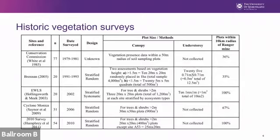Ian Hollingsworth and Ingrid Meek in 2002 did 20 plots in an area called Georgetown, using stratified systematic sampling. There was also work done for Psicoma Monica. Then a 2010 survey of 54 plots, which was stratified random, and Chris Humphries wrote that up in 2011 — again, only in the overstory.